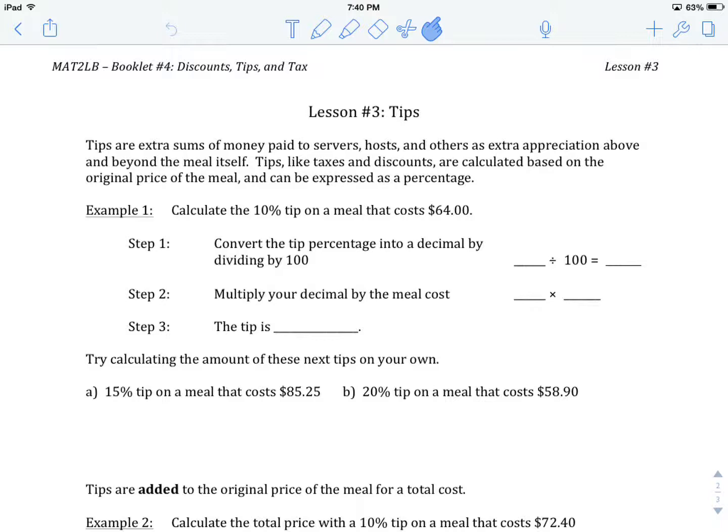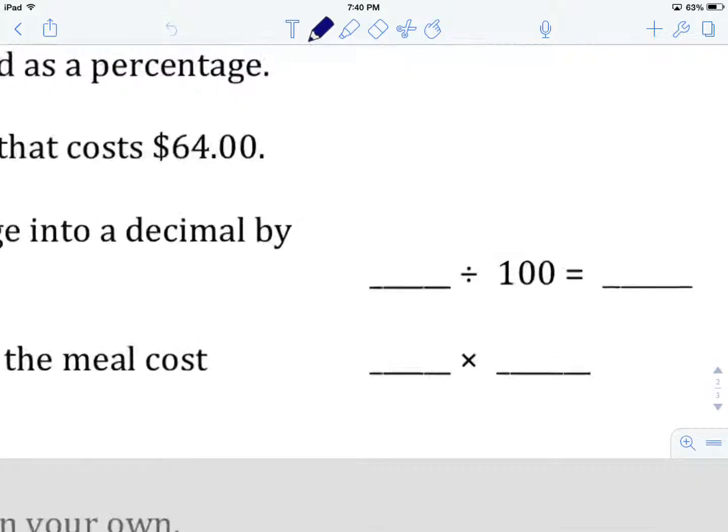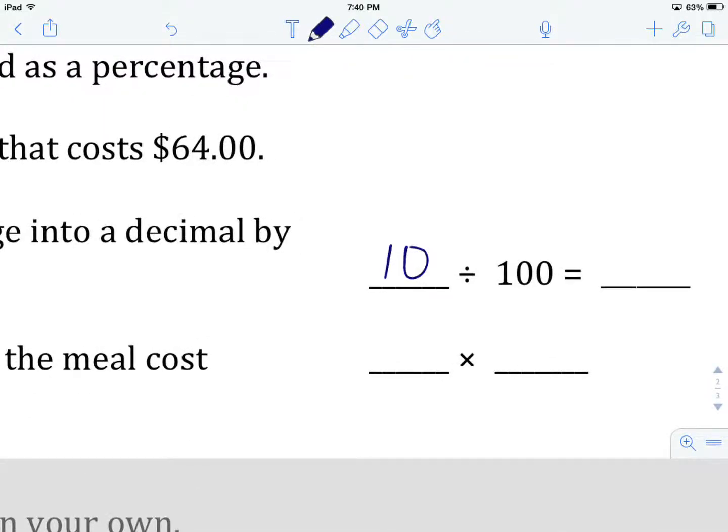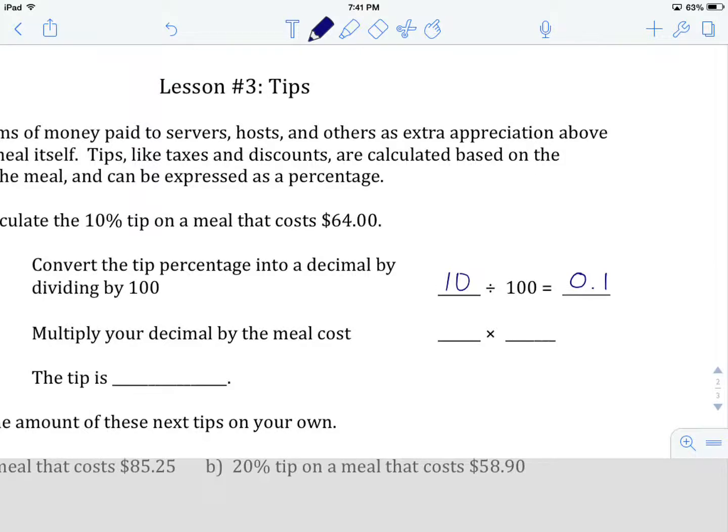So, let's have a look at example number 1. We're working with percentages again here. This should start to be familiar. We're going to calculate the 10% tip on a meal that costs $64. First step is to convert your tip percentage into a decimal. So, we're going to say our percentage is 10 divided by 100. We can type this into our calculator and get 0.1.